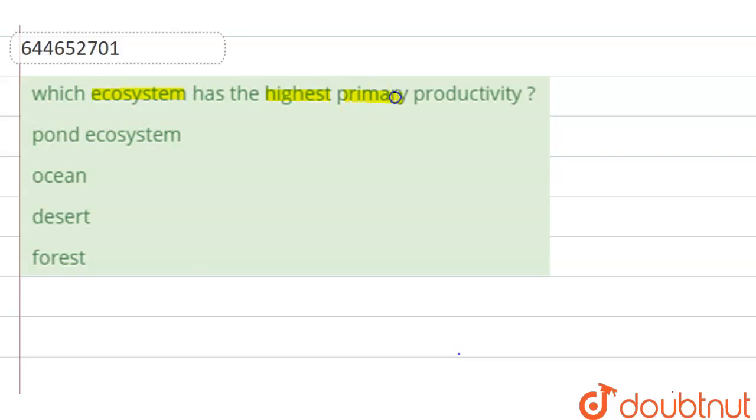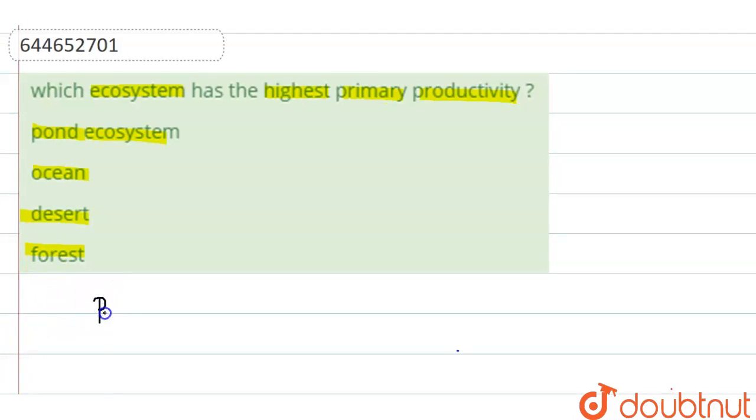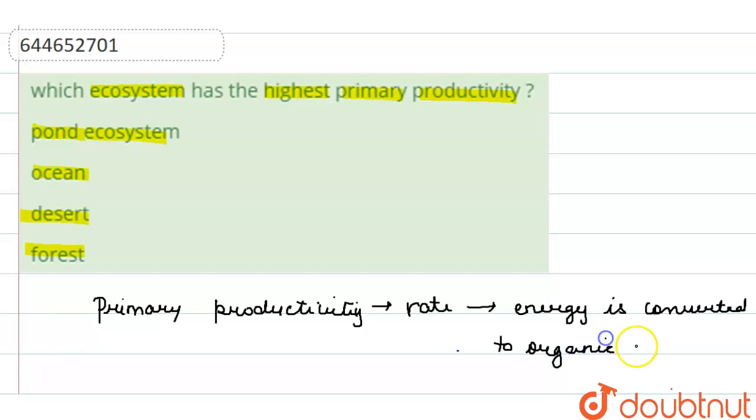ecosystem has the highest primary productivity? Given options are pond ecosystem, ocean, desert, and forest. First, let's see what is primary productivity. Primary productivity is rate at which energy is converted to organic matter.